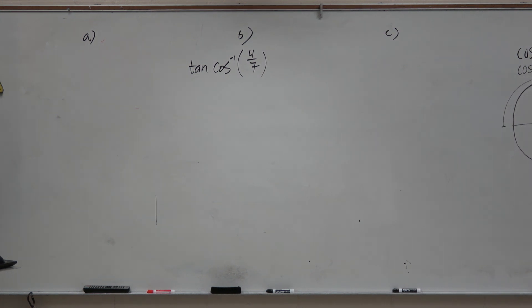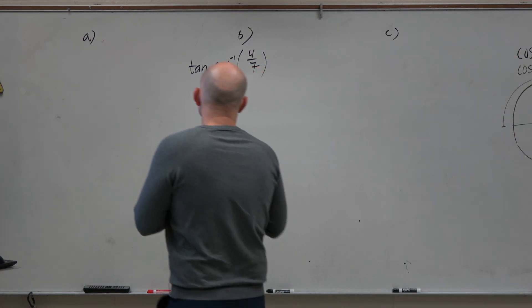Agreed? Everybody can at least agree on that. So we have the cosine inverse of 4 over 7.